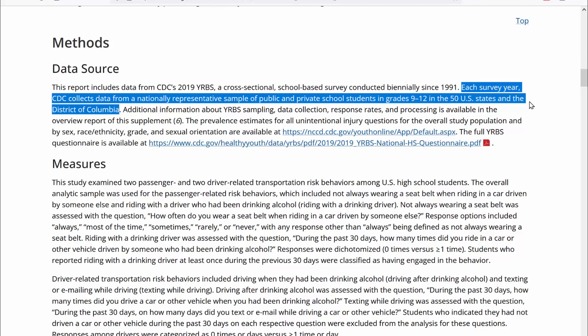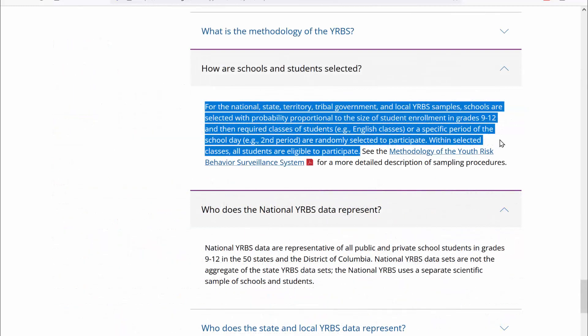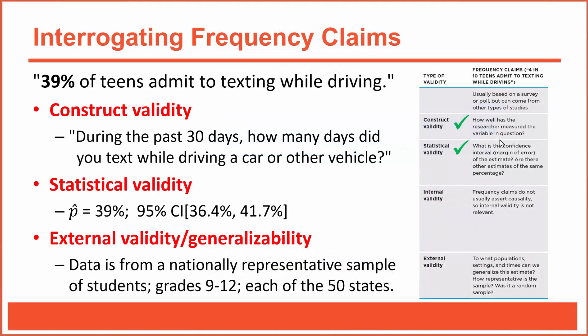I revisited the methods section and found that the CDC collects data from a nationally representative sample of students in grades 9 through 12 in each of the 50 states. A frequently asked questions section confirmed that students are randomly selected to participate. Random samples from all across the country are likely to produce data that represents the country very well. So the frequency claim that 39% of teens admit to texting while driving is likely representative of American teens in grades 9 through 12. The external validity seems good.